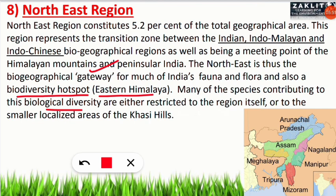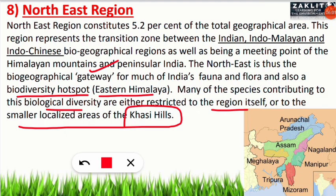The seven sisters of the northeast are: Arunachal Pradesh, Nagaland, Assam, Meghalaya, Manipur, Tripura, and Mizoram.